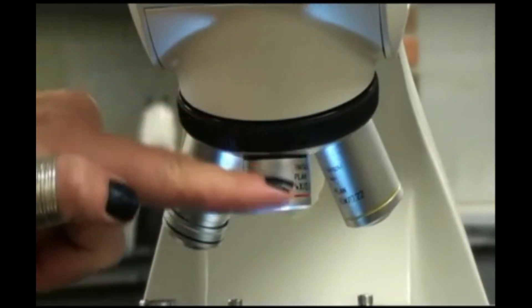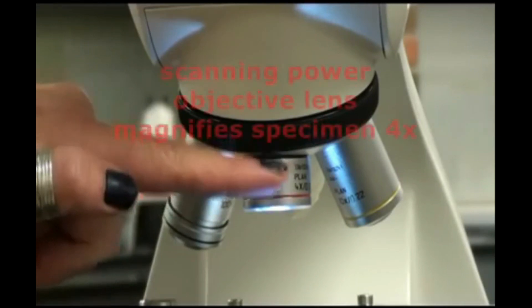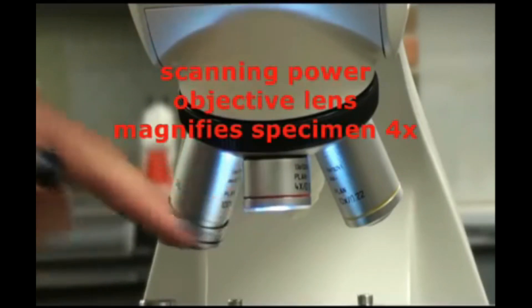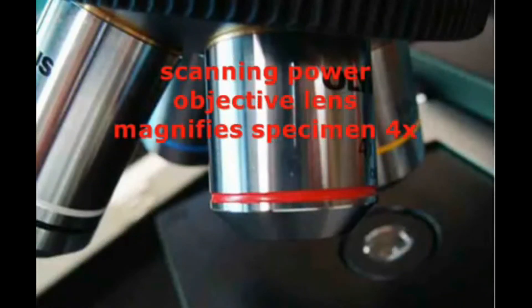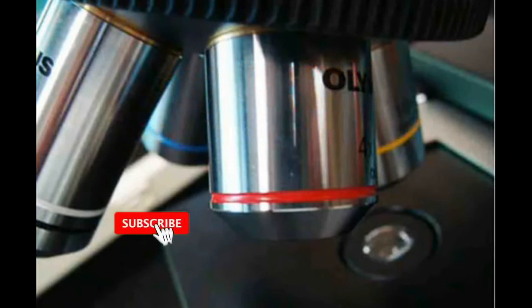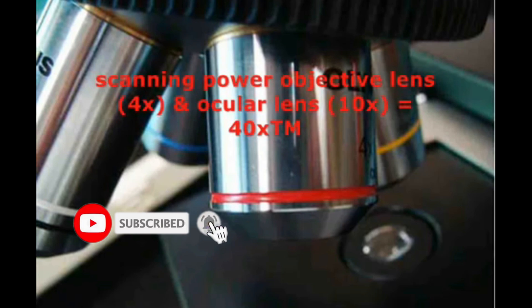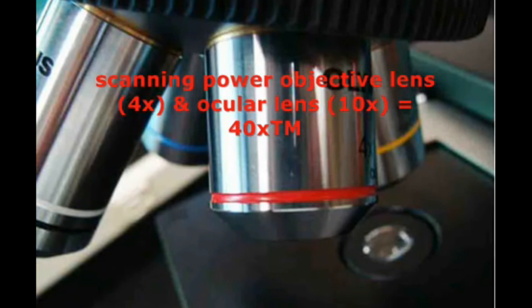The shortest objective lens is called the scanning power. It has a red band around it and it magnifies the specimen four times actual size. However, since I am always looking through both the ocular and the objective to view my specimen, I multiply the powers together to get my total magnification. So the ocular magnifies ten times, the scanning magnifies four times, meaning at scanning power my total magnification is forty times actual size.